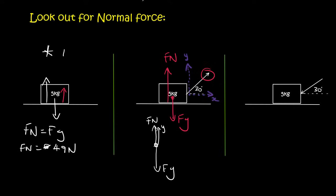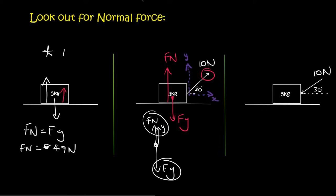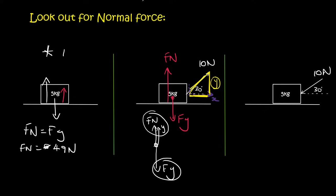Let's say the applied force is 10 newtons and the mass is also giving us 10 newtons for gravity. Gravity will balance the normal force and the y-component of that applied force — they must all balance, otherwise the object would sink into the floor or lift off the ground. Let's draw a triangle: we have 10 newtons as the hypotenuse and an angle of 30 degrees, and we're looking for the y-component.